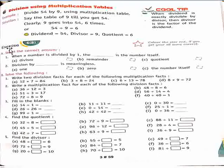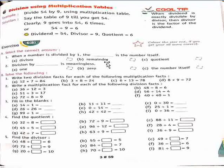Now let's start our Exercise 6.B, Part A. Select the correct answer. First question: when a number is divided by one, the dash is the number itself. So the answer is option C — quotient. Second question: division by dash is meaningless. According to the last property, dividing by zero is meaningless. So option B — zero — is correct.